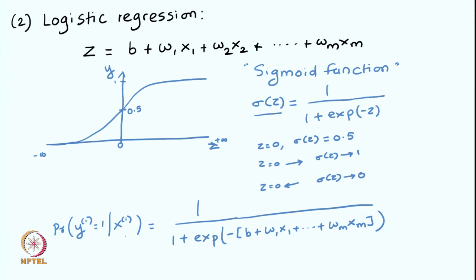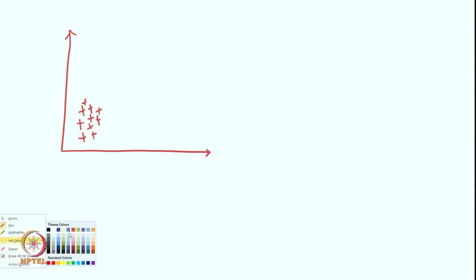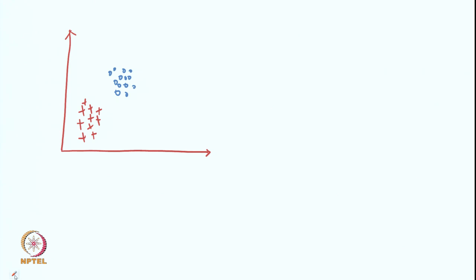Now you will be wondering what kind of decision boundary we get, because we are essentially dividing the area into a positive class and a negative class. Let us try to see what kind of decision boundary logistic regression gives us. There are two different kinds of classes: crosses and circles. This could be one of the potential decision boundaries between our two classes. Logistic regression is also a linear classifier because we get a linear classification boundary in the most basic case.